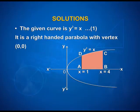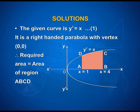Look at the solution to the first problem. The given curve is y squared is equal to x. It is a right-handed parabola with vertex (0, 0) at the origin. Therefore, the required area is equal to the area of the region A, B, C, D.